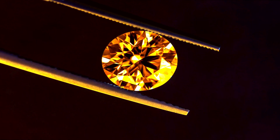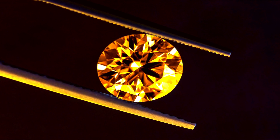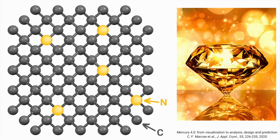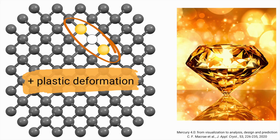Nitrogen atoms are also present in the fancy orange diamonds. Just like the yellow diamonds, the color of orange diamonds is given by nitrogen impurities in the diamond crystal structure. The difference comes from the way the nitrogen atoms are organized in the diamond lattice — a higher concentration of isolated nitrogen centers can lead to an orange color. Another reason for the orange color can be a combination of plastic deformation of the crystal and having two nitrogen impurities and a vacancy grouped together in the crystal structure. A vacancy means that one of the carbon atoms is missing from where it's supposed to be in the lattice.